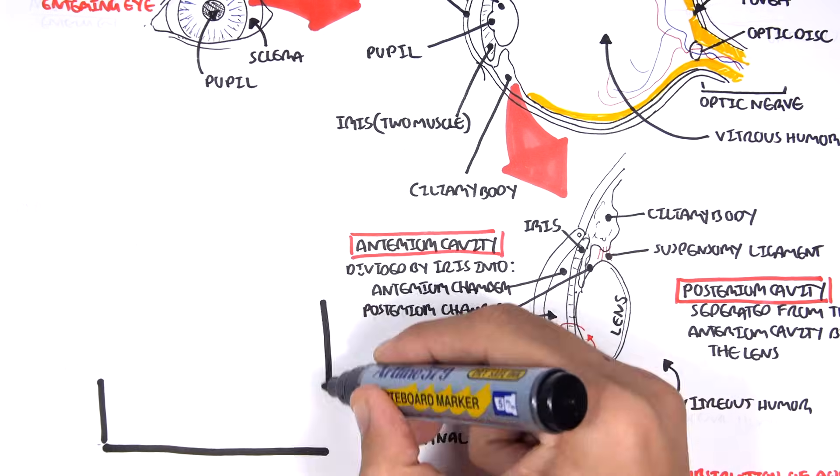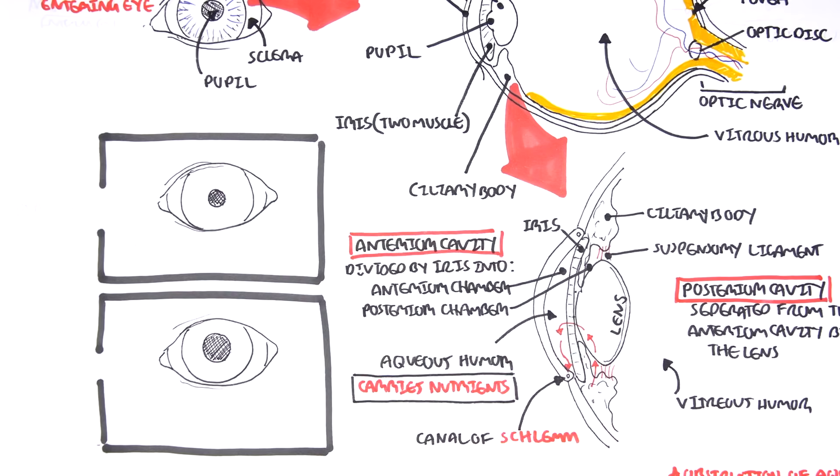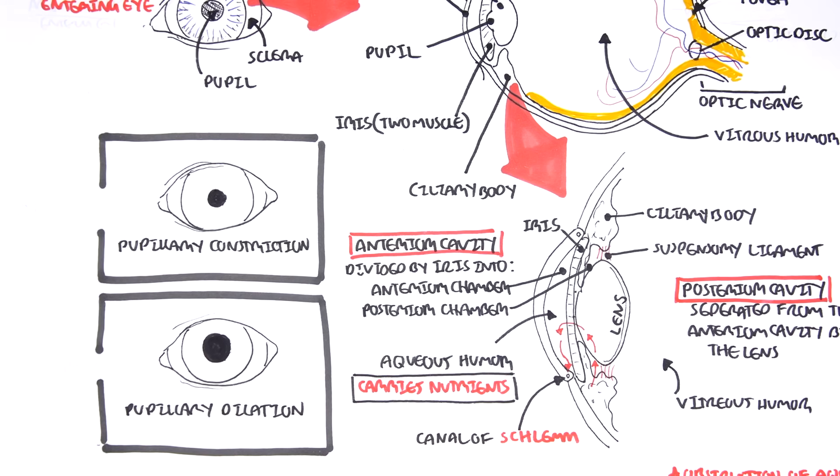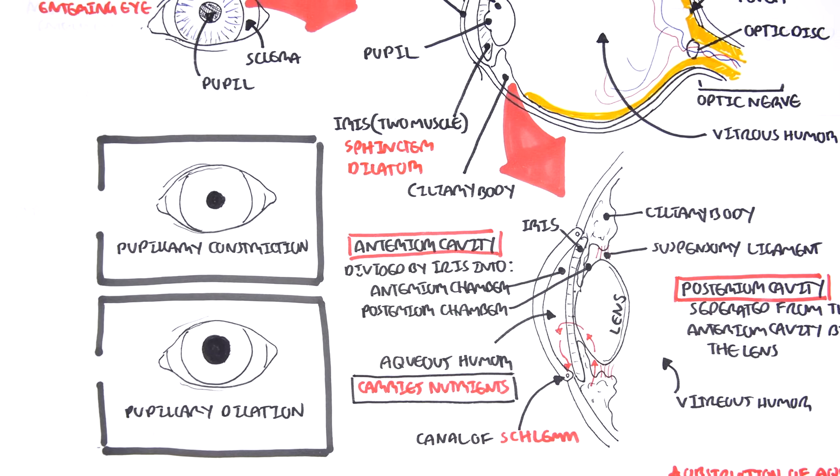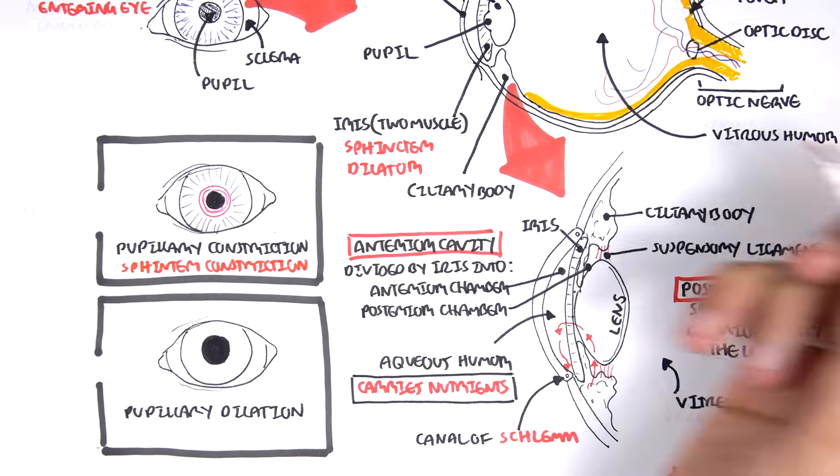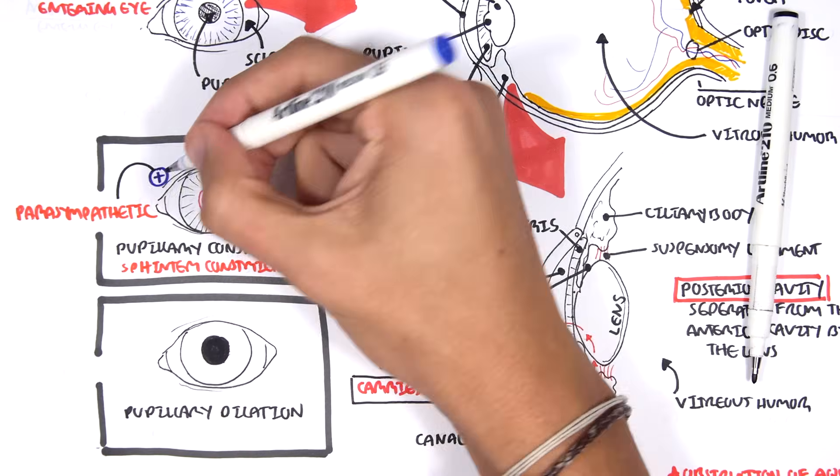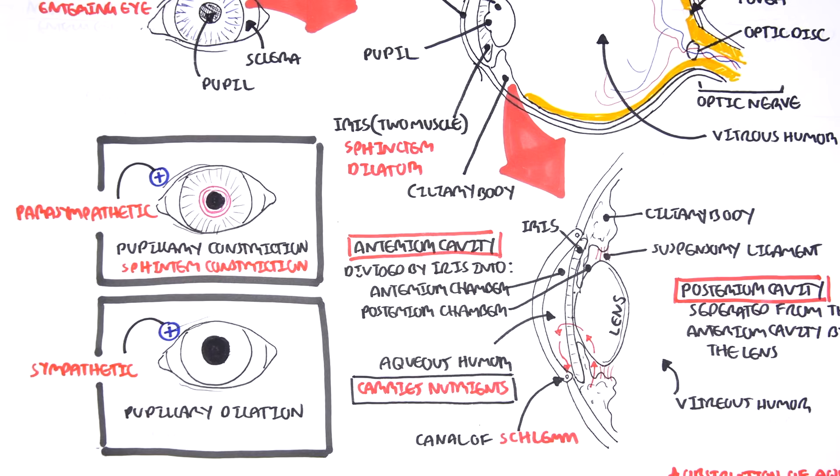The iris controls the size of the pupil and thus adjusts the amount of light entering the eye. Let us look at two scenarios: pupillary constriction and pupillary dilation. The iris has two muscles: the sphincter muscles and the dilator muscles on the outside. The sphincter muscles are responsible for pupillary constriction and are stimulated by the parasympathetic nerve. Sympathetic stimulation causes pupillary dilation through the dilator muscles.